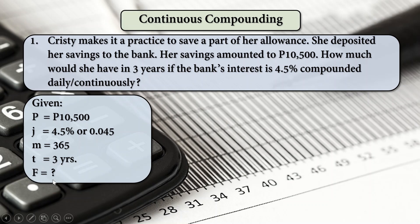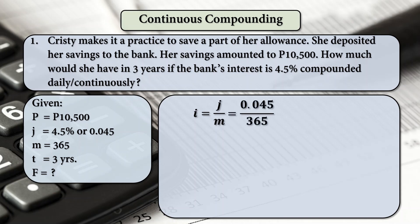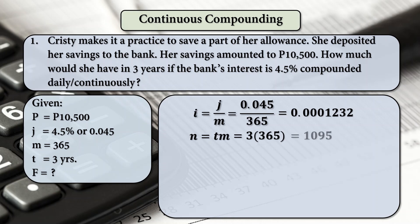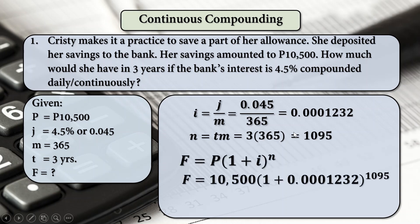First, we have to find F. Finding I: 0.045 divided by 365, that is 0.00012328. N is T times M, or 3 times 365, which is equal to 1,095. So finding for F: that is 10,500 times (1 plus 0.0001232) raised to 1,095, wherein F is equal to 12,017 pesos and 64 centavos.